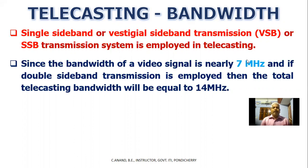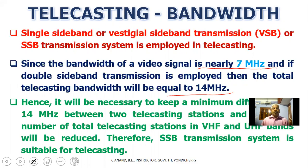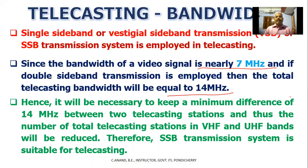How many MHz is the bandwidth? The video signal is nearly 7 MHz. If we use a double sideband system, we would need 14 MHz. That is why we use single sideband, keeping the bandwidth at 7 MHz, so that more channels can be accommodated.